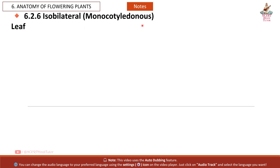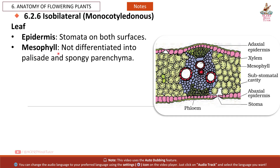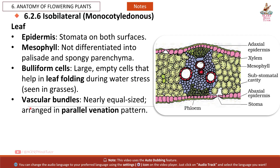The Isobilateral (Monocotyledonous) Leaf has stomata on both surfaces. The mesophyll is not differentiated into palisade and spongy parenchyma. Bulliform cells are large empty cells that help in leaf folding during water stress, seen in grasses. Vascular bundles are nearly equal in size and arranged in a parallel venation pattern.